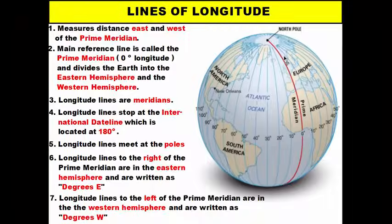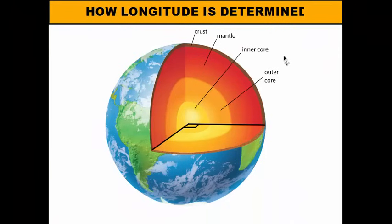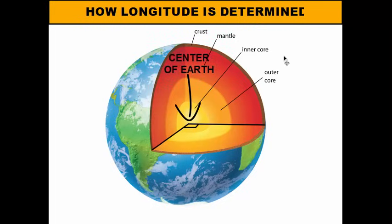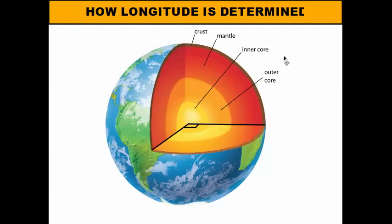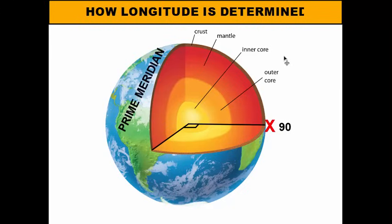Longitude lines are also in degrees because they're created by angles. You need the center of the earth, the prime meridian, and a position on earth's surface. Drawing a line from the center out to a spot away from the prime meridian creates an angle — for example, a 90-degree angle. You must then determine whether that spot is east or west of the prime meridian. If it's to the right of the prime meridian, that gives you 90 degrees east.